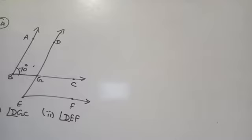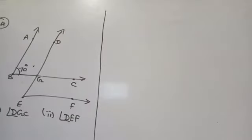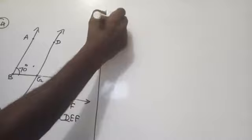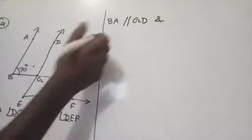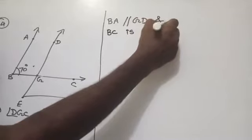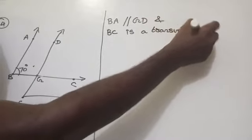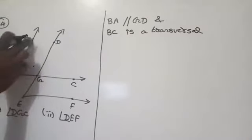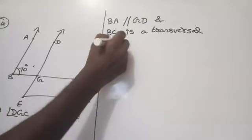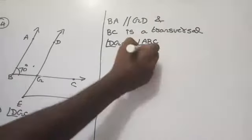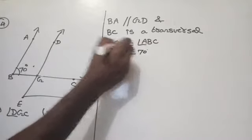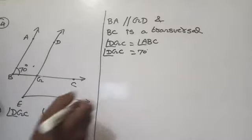We will find angle DGC first. DGC is 70 degrees, because BA is parallel to GD, and BC is a transversal. Therefore, corresponding angles are equal: angle DGC equals angle ABC. Since angle ABC is 70 degrees, therefore angle DGC equals 70 degrees. The reason is corresponding angles are equal.